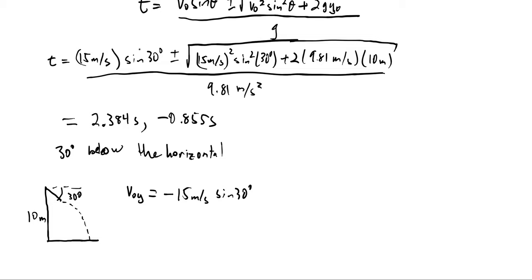You'll notice that nothing in this problem will change except for this first term. So I'm going to go ahead and repeat my calculation, use this v0y again, and if I get that, then I get my positive answer is 0.855 seconds. And my negative answer is negative 2.384 seconds. So this is how long it would take if it was shot down at the same initial speed. It would only be 0.855 seconds.